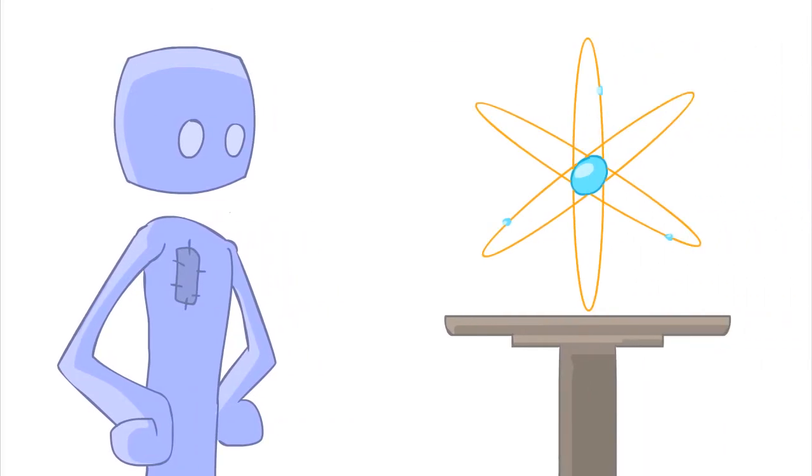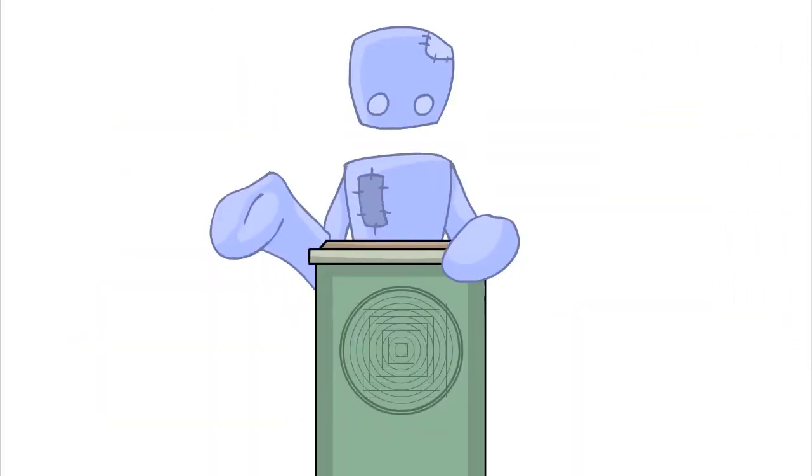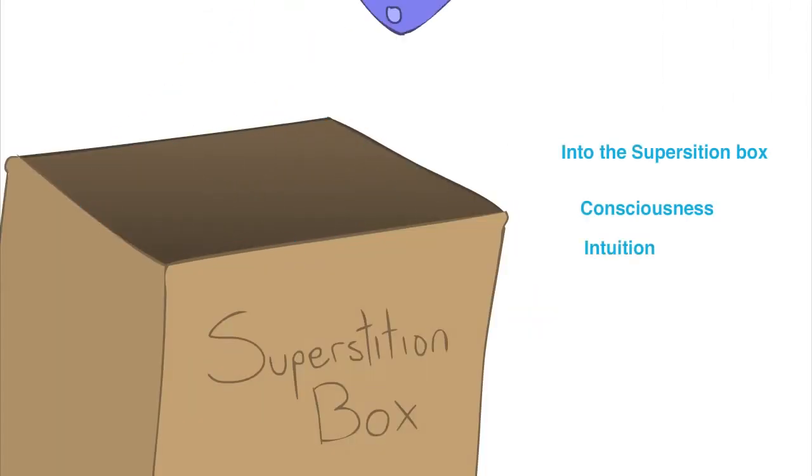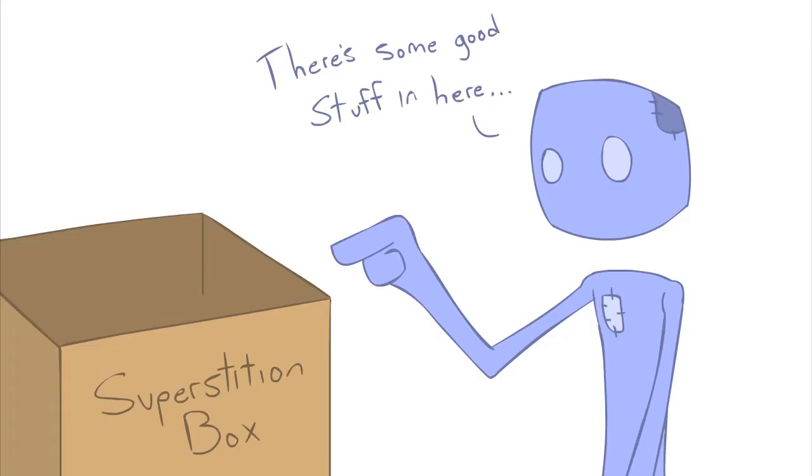We turned to science instead to answer our questions about the universe. The only problem was that we grouped in many things with superstition that we probably shouldn't have—things like consciousness, intuition, human connection, paranormal phenomenon. All of it went right out the door with superstition, when in fact we've proven these things today to be real.